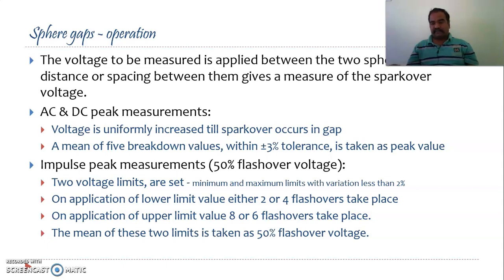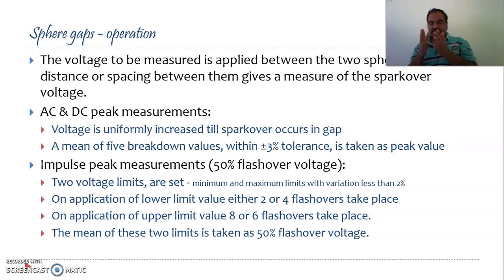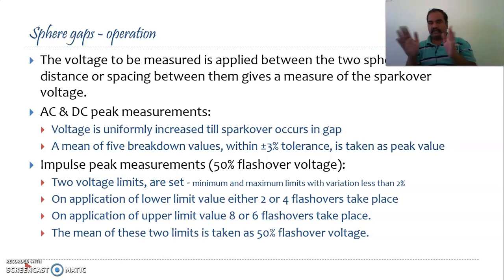In the case of impulse voltages, the impulse voltage will have a 50 percent or 100 percent flash-over voltage. To measure 50 percent impulse flash-over voltage, two voltage limits are set within a range of 2 percent — one maximum and one minimum. At application of the lower limit, 2 or 4 flash-overs must take place; at the higher limit, 8 or 6 flash-overs. In total, 10 flash-overs must happen. The mean of these two limits is taken as the 50 percent flash-over voltage.